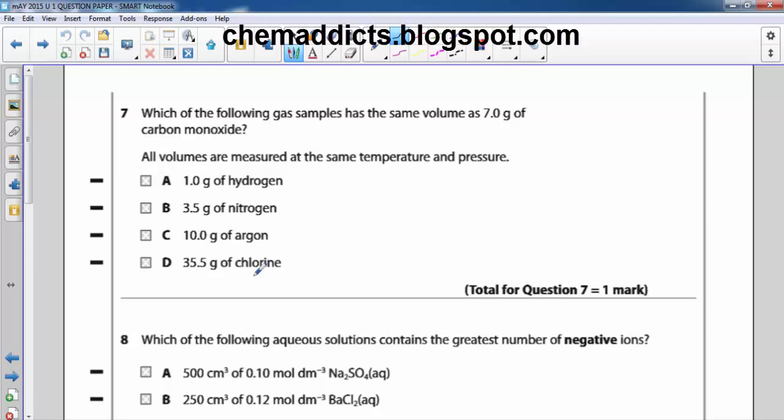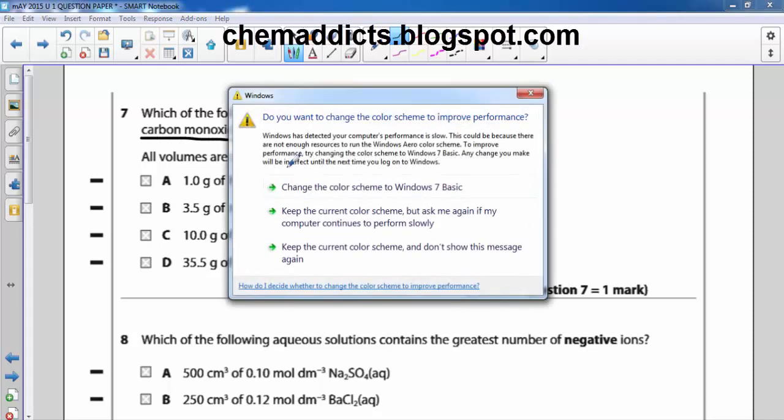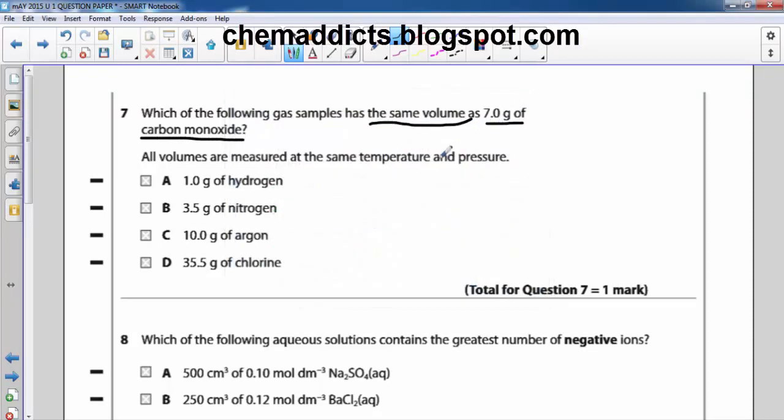At first, let us see the key points of this question. The key points of this question are the same volume and 7g of carbon monoxide. To solve these questions, we need to find the number of moles only.